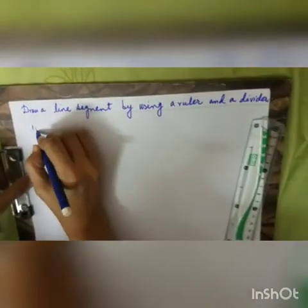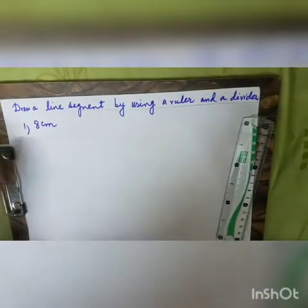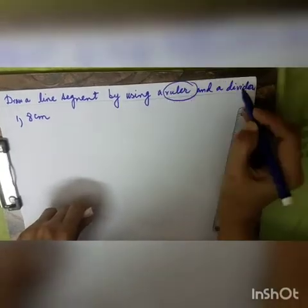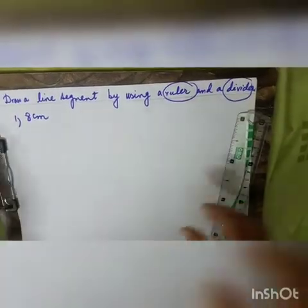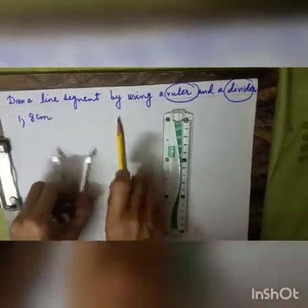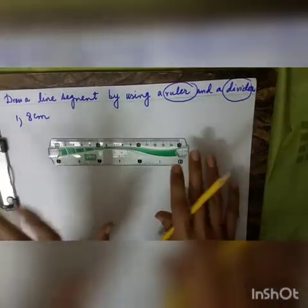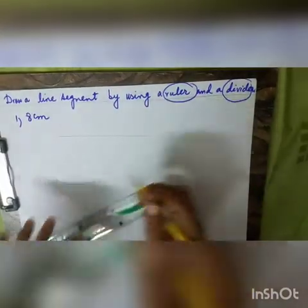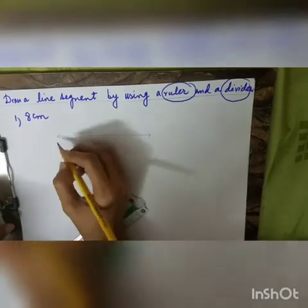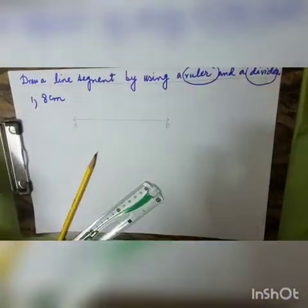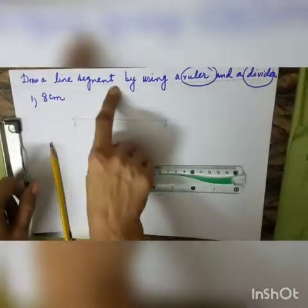Today's first example is: draw a line segment of 8 centimeters with the help of a ruler and a divider. For this purpose we need a pencil, a ruler, and a divider. The first step is to draw a straight line without any measurement. I have drawn a straight line and labeled the first end A and the other end B.